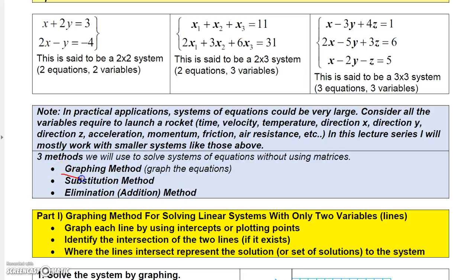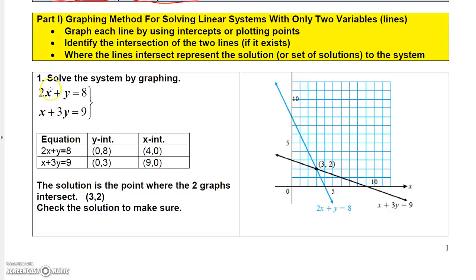One way to solve systems of equations is by graphing. That's not the greatest method, but it does give you a good visualization. And then the other two methods you can use is substitution method and elimination method. If you're going to solve a system by graphing, you're really only going to want it to have two variables, because that way you're only dealing with a two-dimensional type example. So here I have a system 2x plus y equals 8, and x plus 3y equals 9.